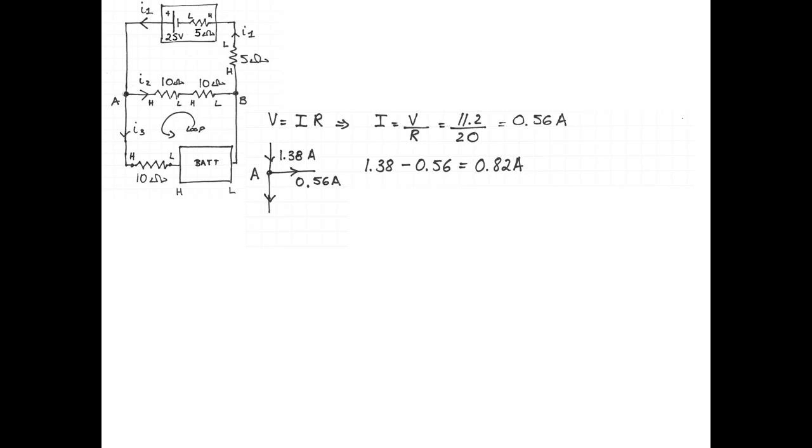To figure out the potential difference across the battery I'm going to use a loop rule. Now when you're doing a loop rule you should always indicate on your diagram which way you're counting voltages. I'm also going to guess the place of high and low potential at the ends of my battery. This is completely arbitrary. If I've guessed wrong the number will come out negative and I will fix everything in the end.